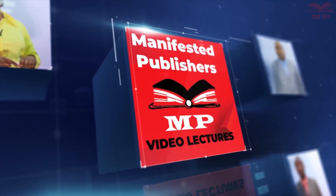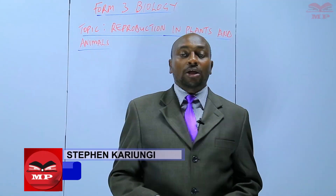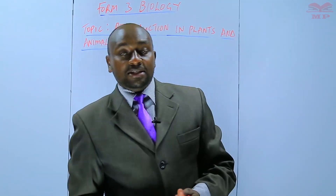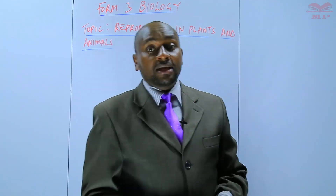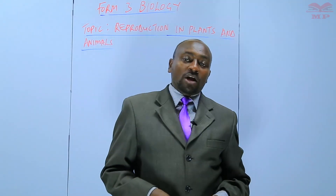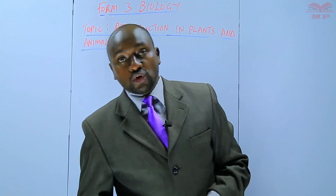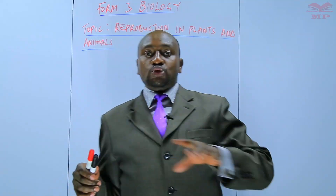Welcome to Manifested Publishers. My name is Stephen Karyungi and we continue with our topic of discussion on reproduction in plants and animals. During our last lesson we discussed the menstrual cycle, including the activities that occur during menstruation: the follicular phase, ovulation, and the luteal phase. Those are the main stages that constitute the menstrual cycle.